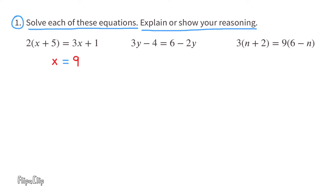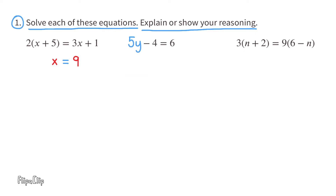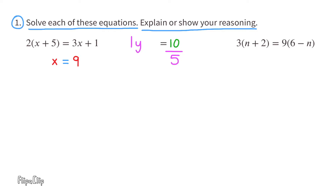Look at the second equation. There are more y's on the left-hand side, so let's take away the negative 2y on the right-hand side by adding 2y to both sides. On the right they cancel out. On the left, 3y plus 2y equals 5y. The equation now reads 5y minus 4 equals 6. Adding 4 to both sides gives 5y equals 10. Dividing both sides by 5, y equals 2.